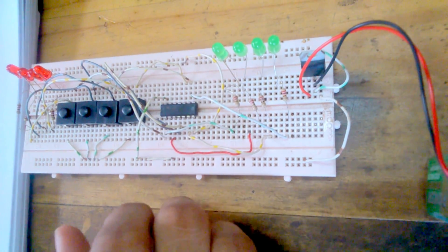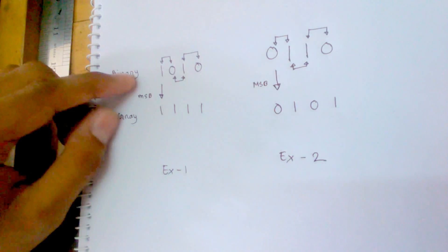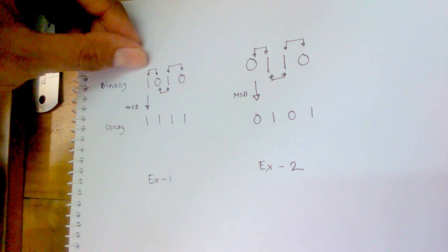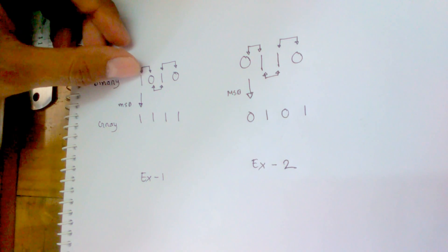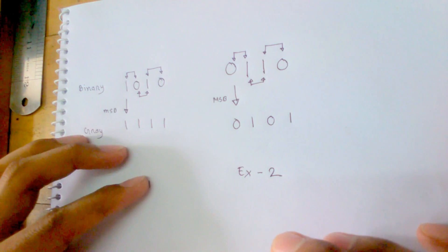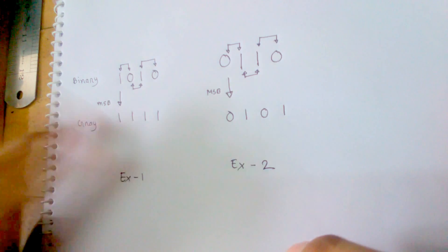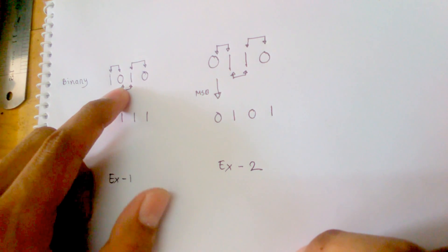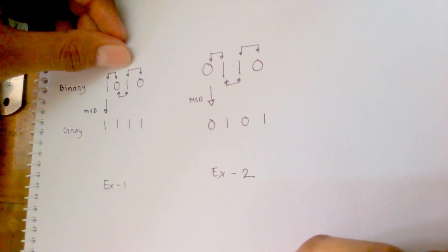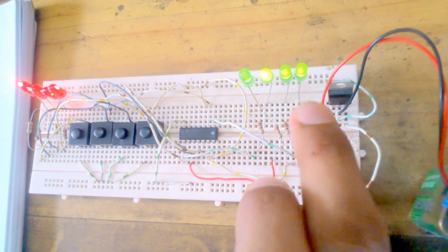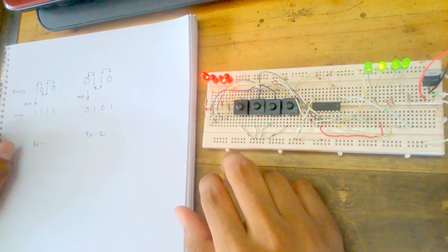Now I am going to show you two examples. First example is binary 1010. The MSB is unchanged. We are checking the first two bits — binary 1 and 0 — and the XOR output is high. XORing the second and third bit, output is also high. Third and fourth bit, output is also high. Now we will see on our breadboard: input one zero one zero, and the output is one one one one — exactly the same as the theoretical solution.